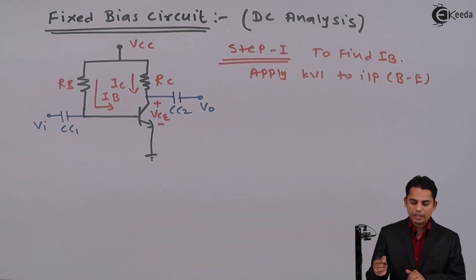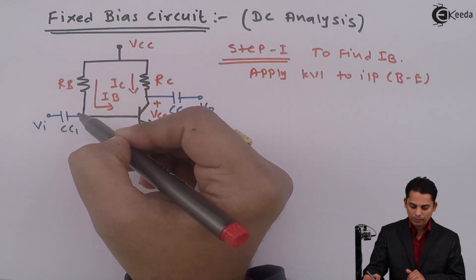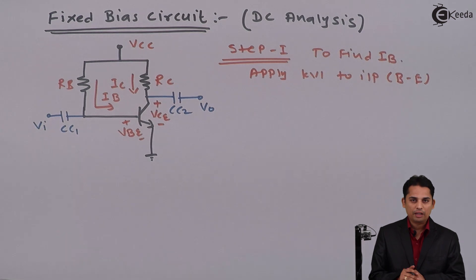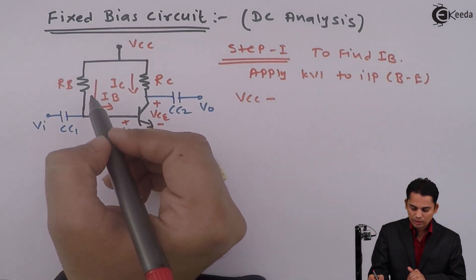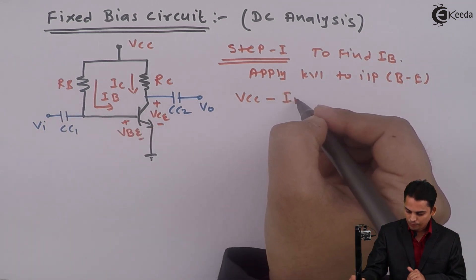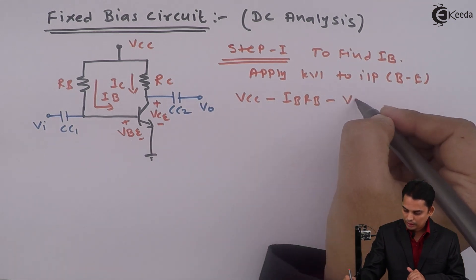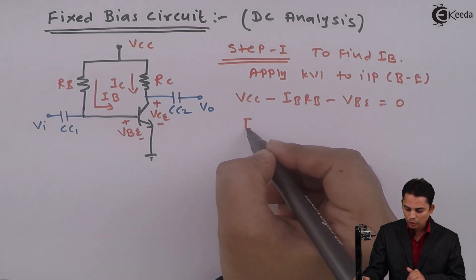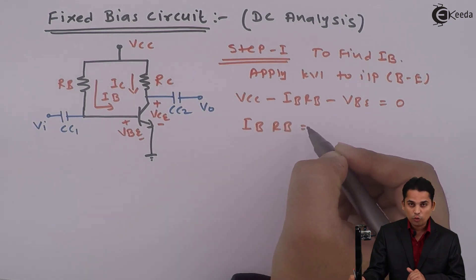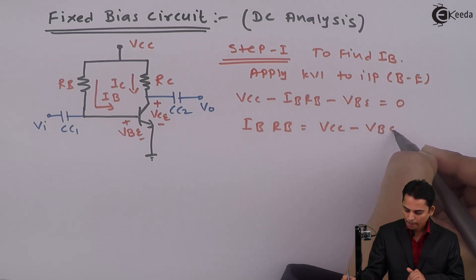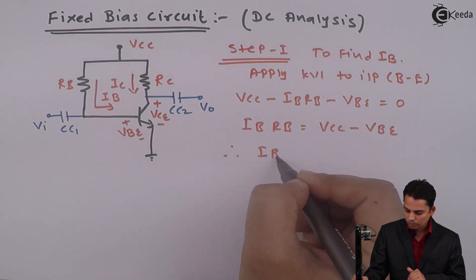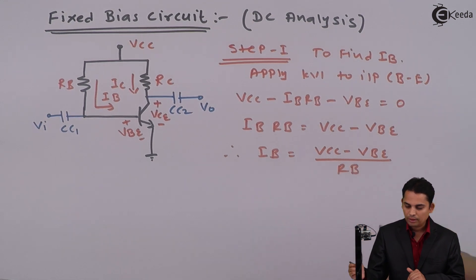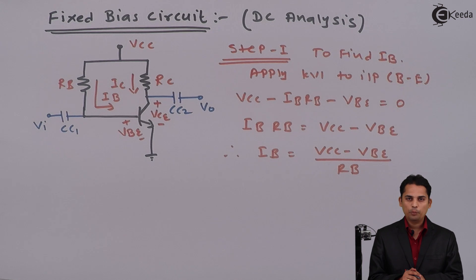Let us apply KVL to the input. KVL will start from VCC. We will go through RB and there will be a voltage called base to emitter voltage VBE. Applying KVL: VCC minus IB times RB minus VBE equals 0. Taking IB to the other side: IB times RB equals VCC minus VBE, and hence IB equals (VCC minus VBE) divided by RB. This is how from step one we get input current IB.